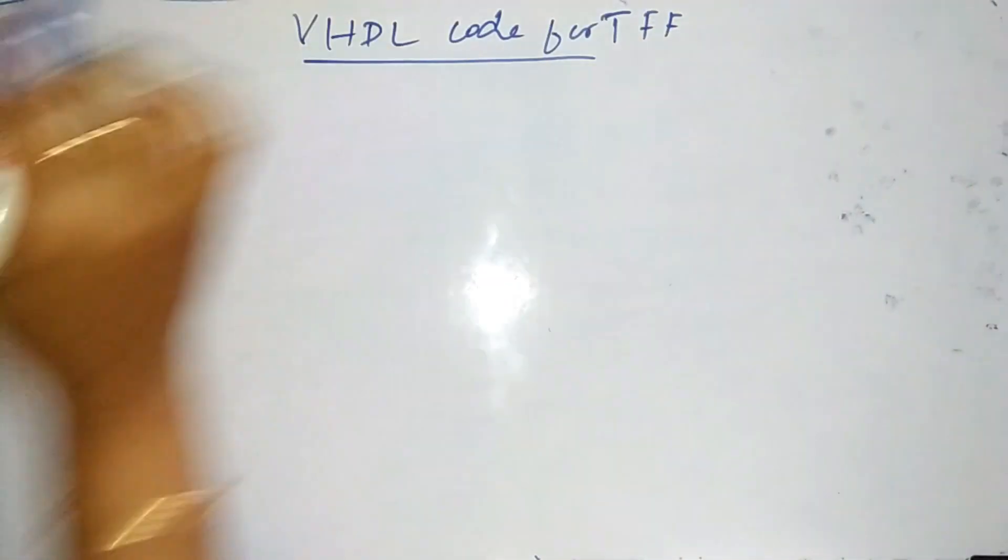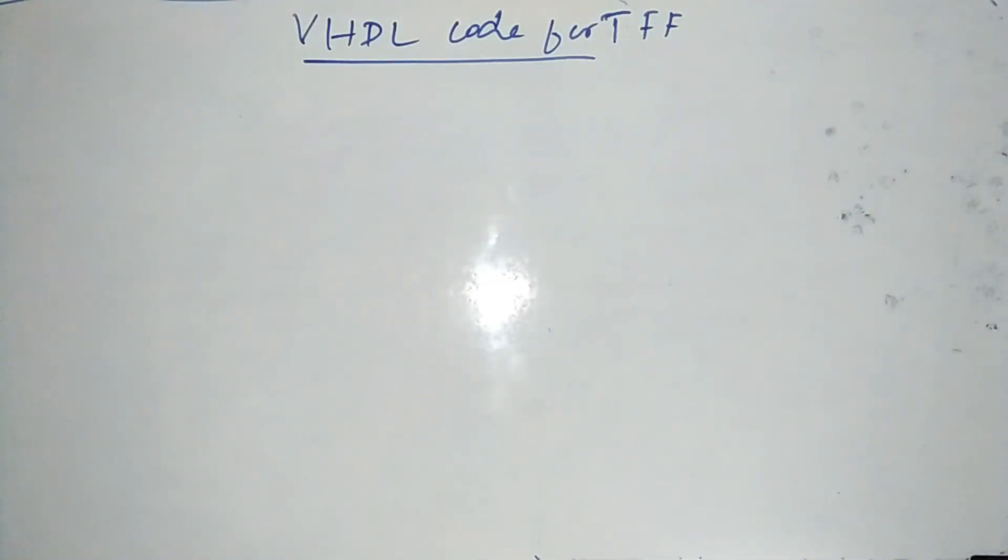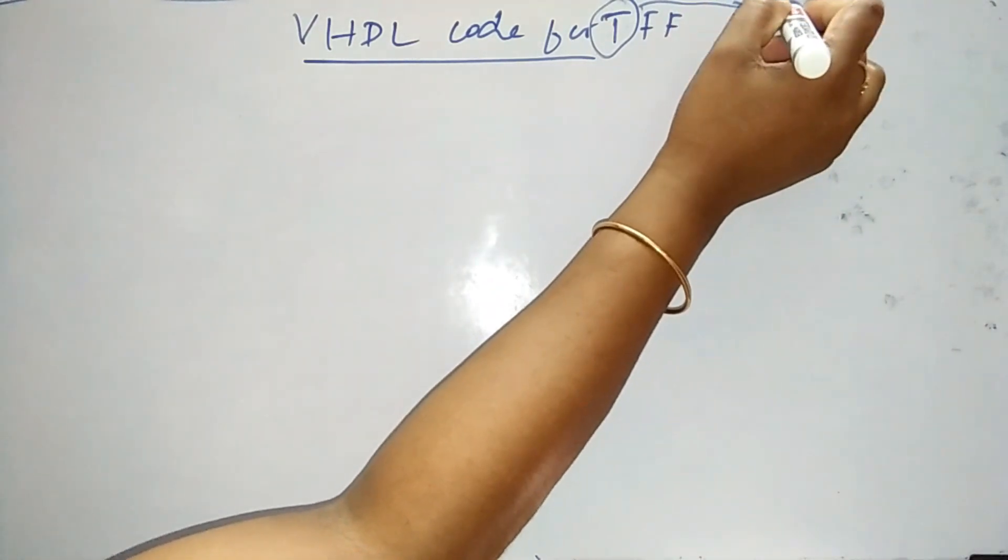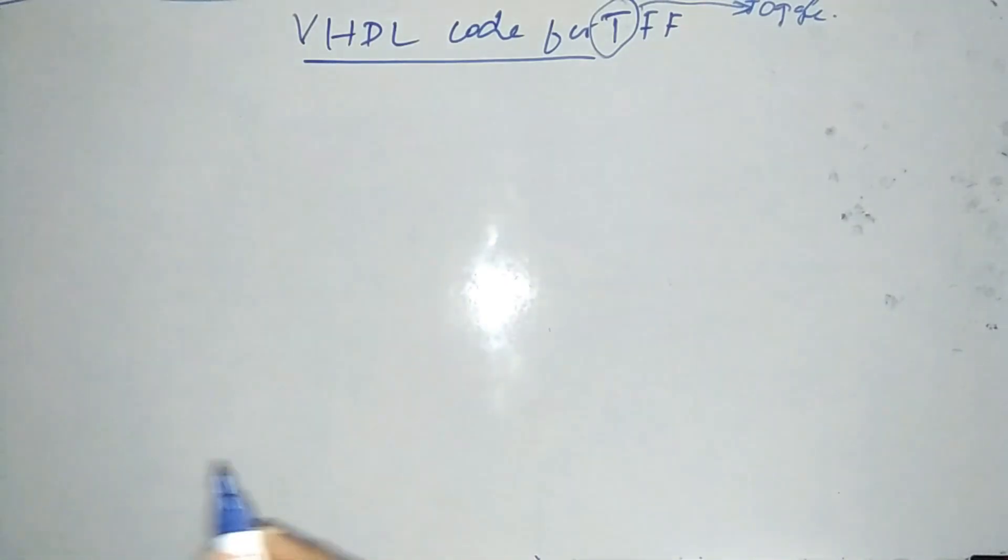As I have told you, we have to know the basic operation of T-flip-flop to start with writing the code for the T-flip-flop. So all of us know that T-flip-flop is the toggle-flip-flop. So the basic function of the T-flip-flop is to toggle the inputs.